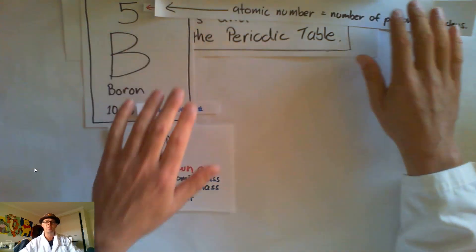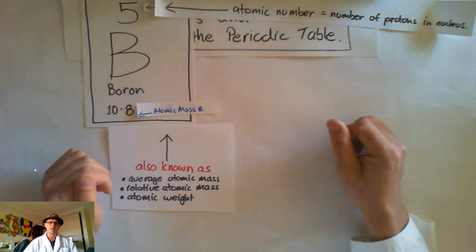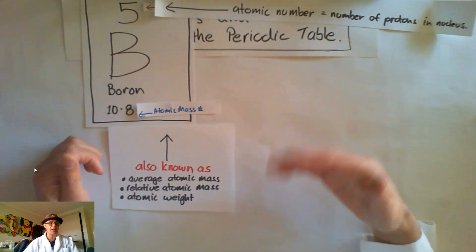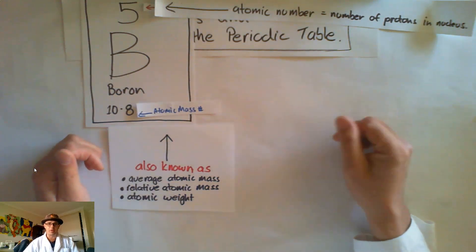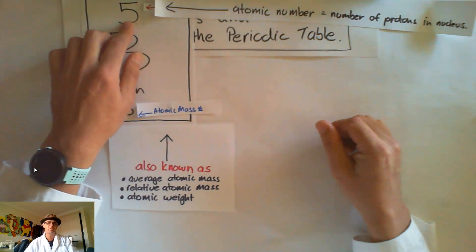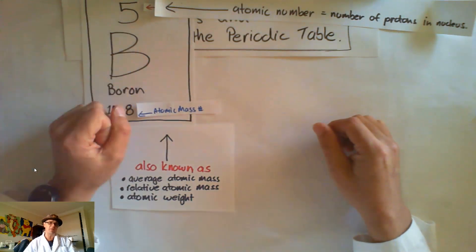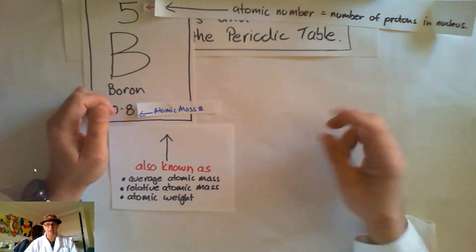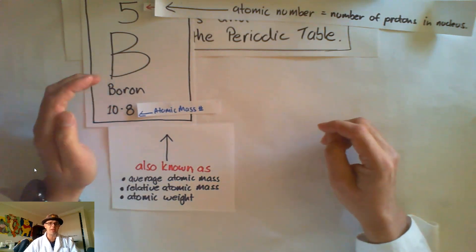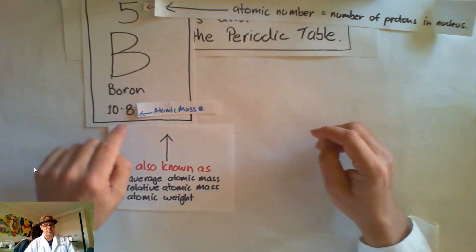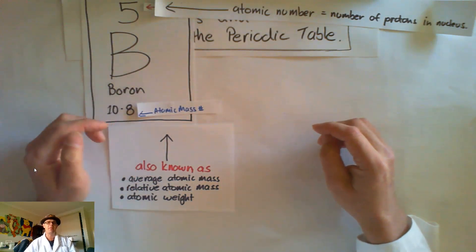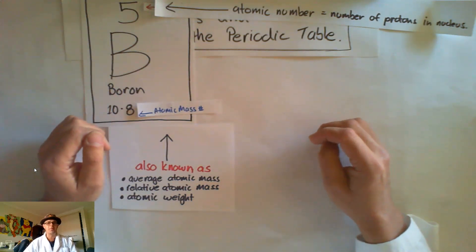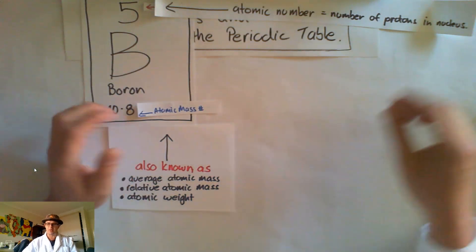We should know by now that the atomic number is the number of protons in the nucleus. Really, really importantly, the number of protons in the nucleus tell us what element we're actually talking about. If it's got five protons, the atomic number is five — that's boron. Any single atom that has five protons is boron. There are two different types: boron-10 and boron-11, which is why we've got 10.8 — that's an average weight of those two isotopes as found in nature.